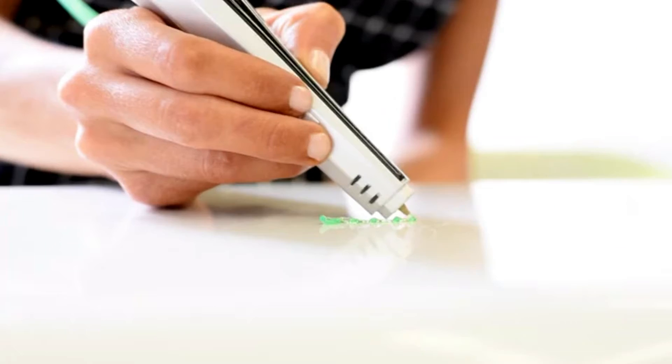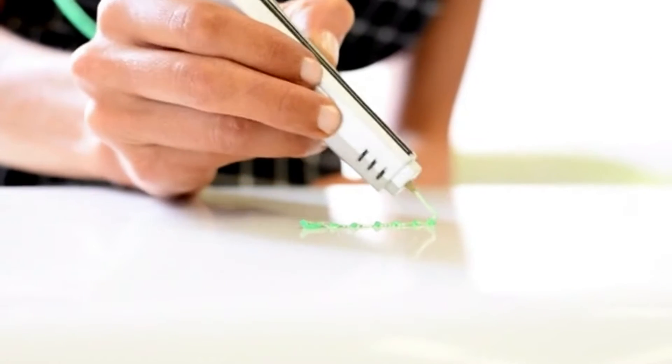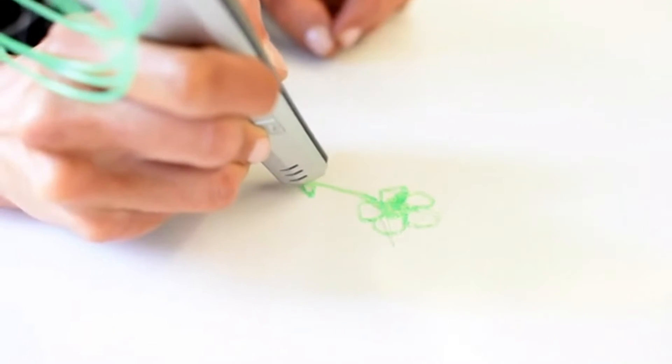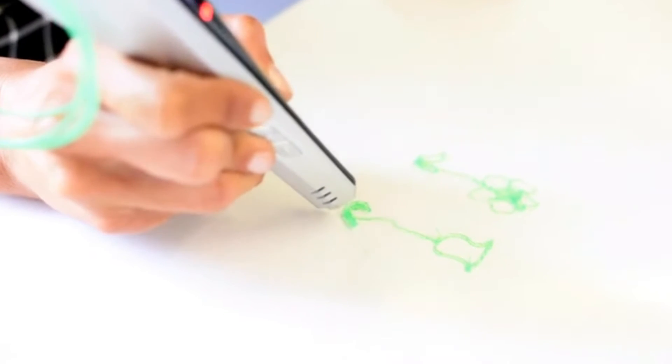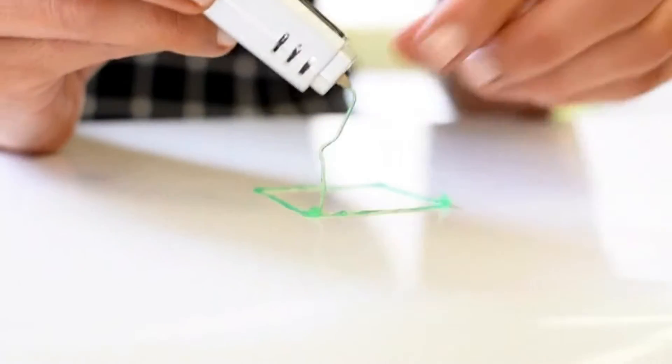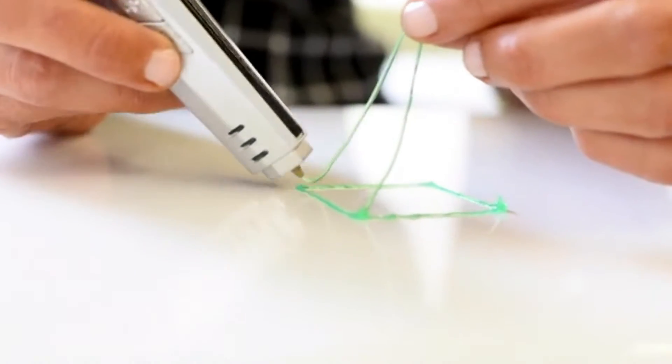This small device will allow you to go beyond your imagination. You can make anything out of it with just a few seconds. Essentially, Scribble 3D pen has the similar functions as 3D printers. It melts and cools colored plastic, letting you form any imaginable shape.